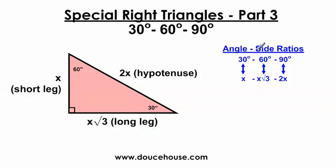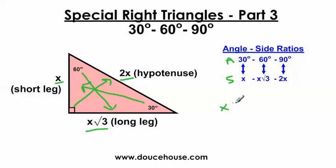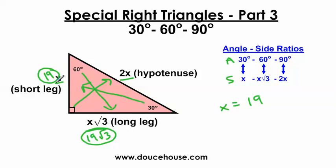Remember that there's a special angle-side ratio between all the sides and angles. Opposite the 30-degree angle, we're always going to label it x. Opposite the 60-degree angle, we're always going to label it x square root 3. And opposite the 90-degree angle, we're always going to label 2x. Keep in mind that x is just a side length. So if x was 19, this side length is 19, the long leg becomes 19 square root 3, and the hypotenuse would be 2 times 19. The short leg and the hypotenuse have a special relationship — I can always double the short leg to get the length of the hypotenuse. That's why it says 2 times x.